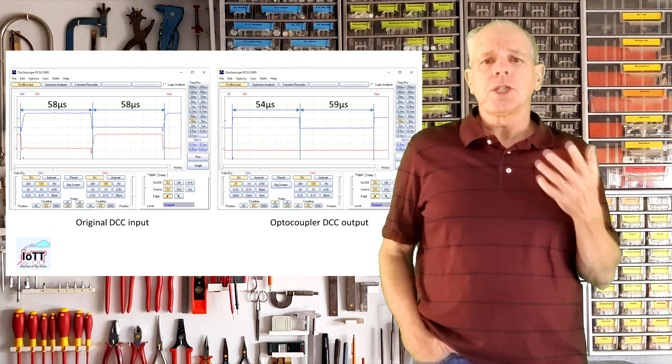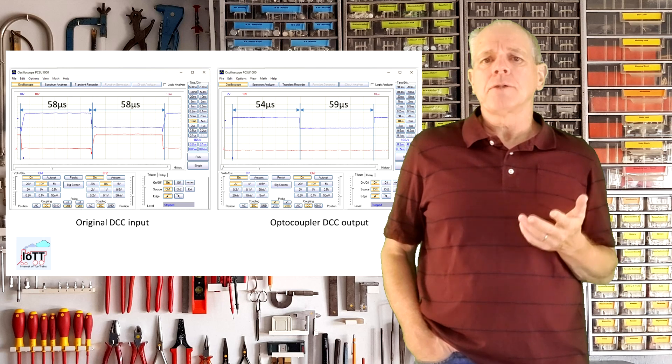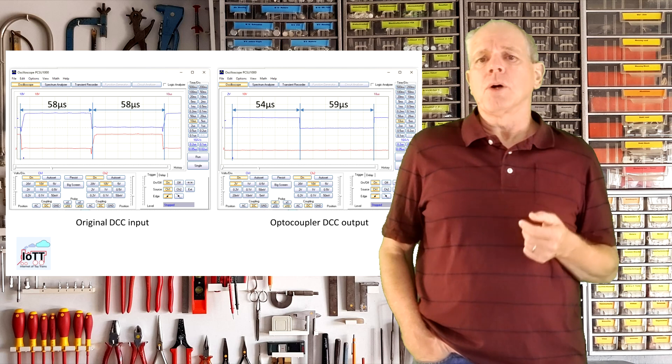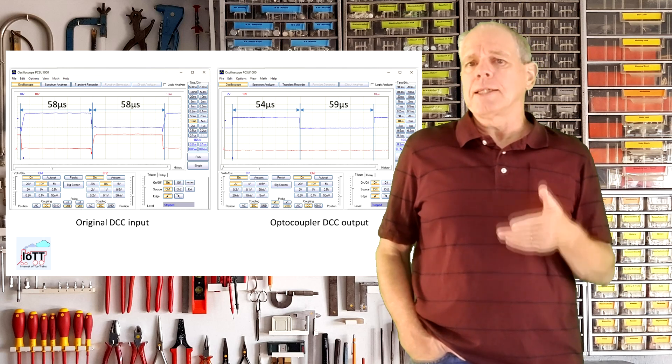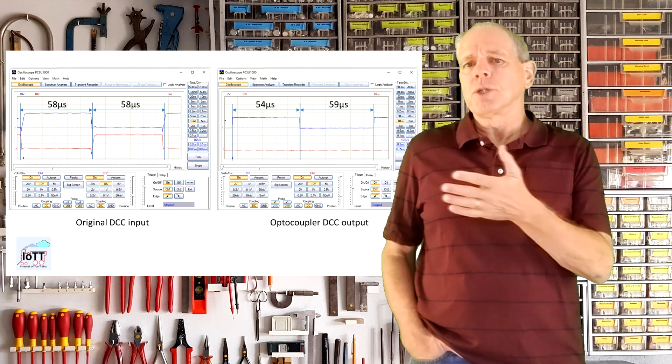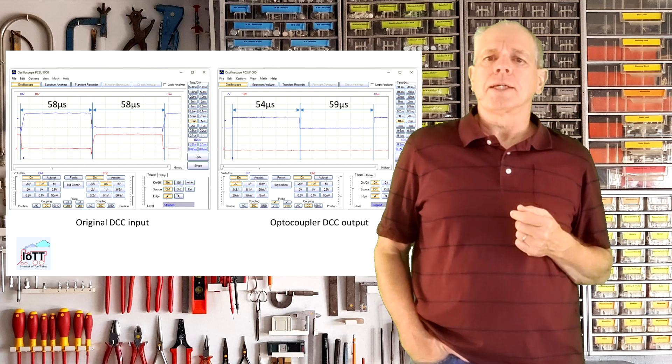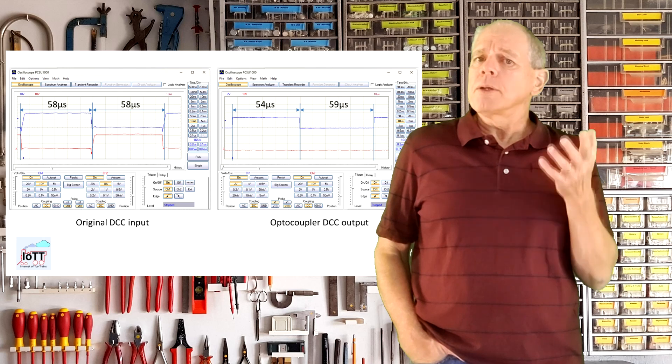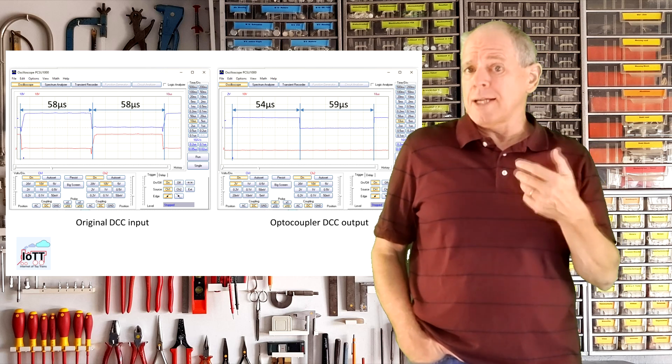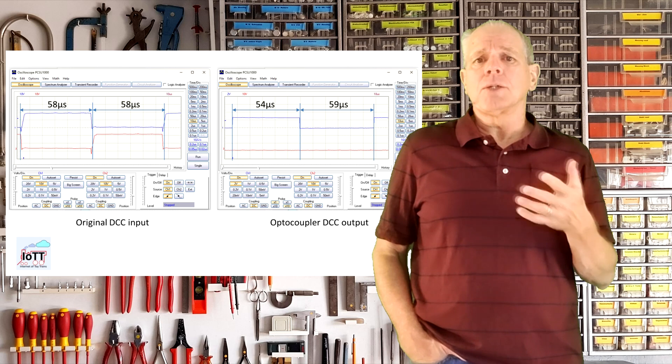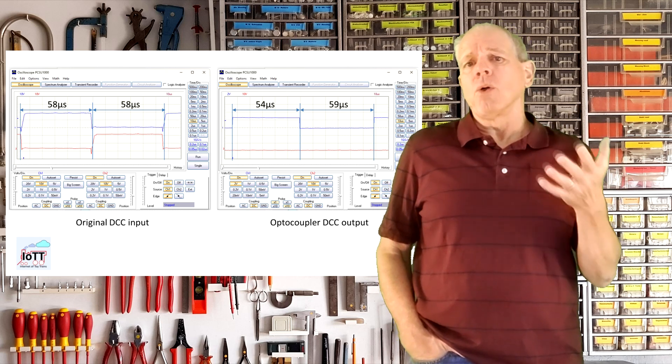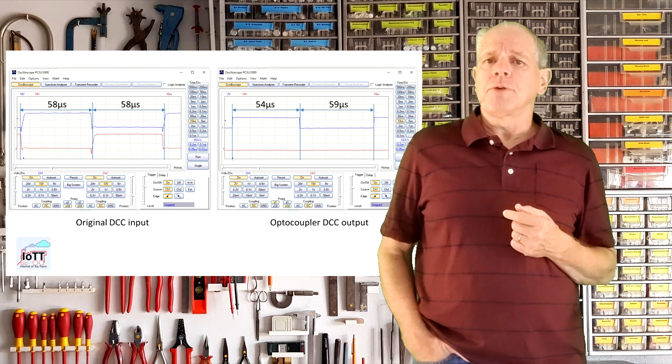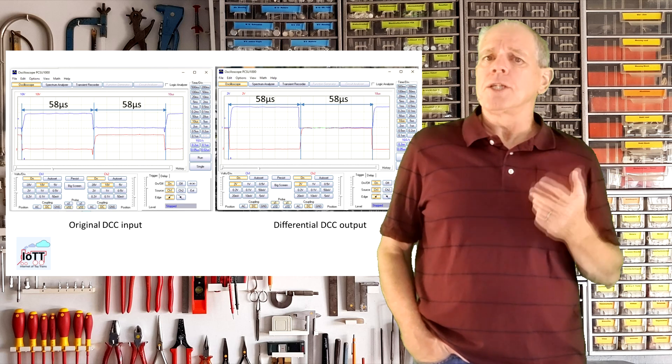When looking at the output of the optocoupler, we now can see that the asymmetry in the length of the two half bits is about 4 microseconds. This is not a problem when building a decoder, but when trying to build a booster which amplifies the signal, it can lead to an output signal that no longer meets DCC signal specifications.